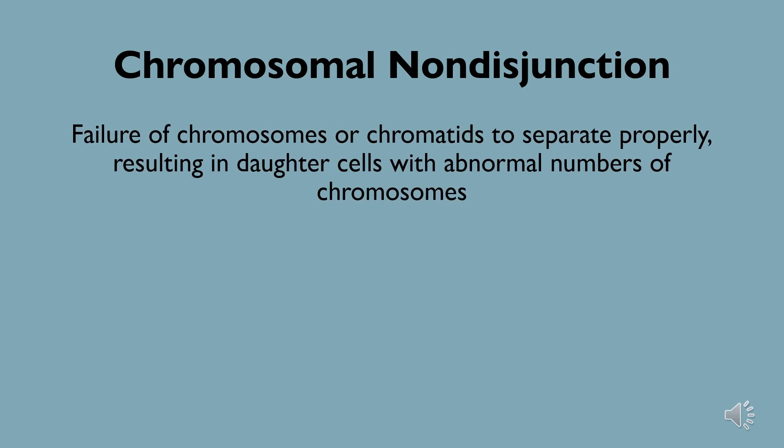Before we get started, let's first define what a chromosomal nondisjunction is. Broadly speaking, a chromosomal nondisjunction is the failure of chromosomes or chromatids to separate properly, resulting in daughter cells with abnormal numbers of chromosomes. Because anaphase is the stage in which chromosomes or chromatids separate, this is where we see nondisjunction events occur.